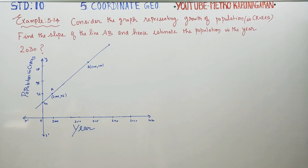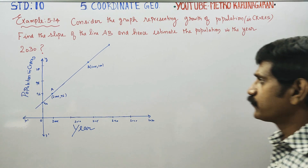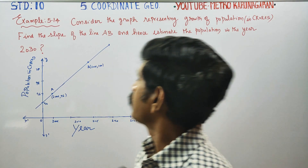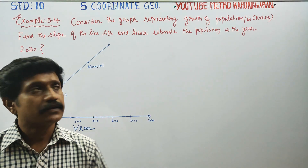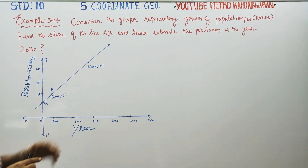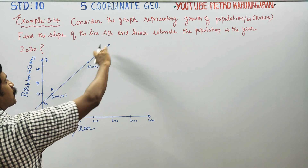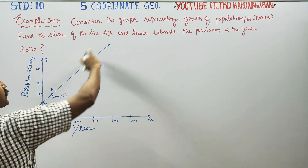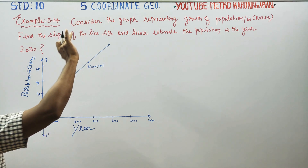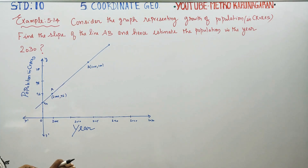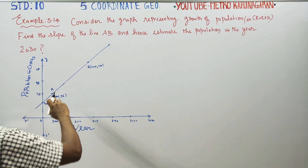Dear 10th standard students, I am Etru Karanagaran. In Coordinate Geometry Example 5.14, consider the graph representing the growth of the population in crores. It is in a straight line. Find the slope of the line AB.